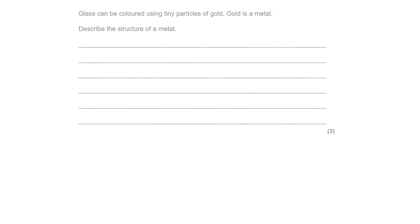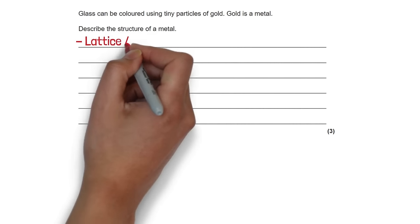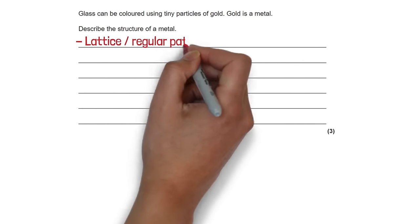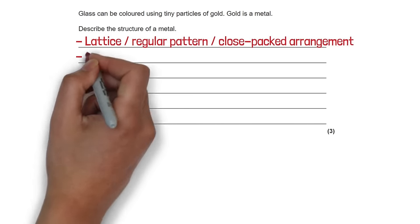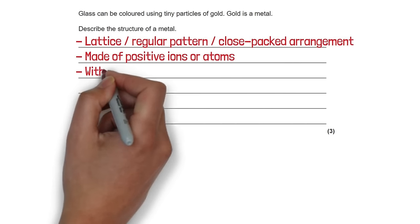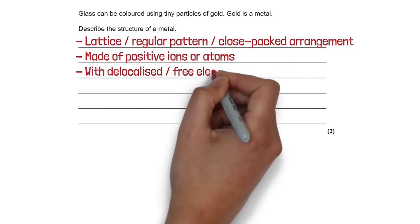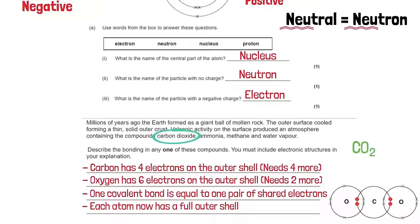Glass can be coloured using tiny particles of gold — gold is a metal. Describe the structure of a metal. The structure is a lattice, or regular pattern, or close-packed arrangement of positive ions. Metal structures have delocalised or free electrons, which is what enables them to conduct electricity.